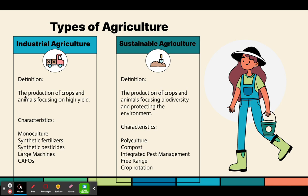Industrial agriculture is the production of crops and animals focusing on high yield. You usually see big machines. It uses monoculture, synthetic fertilizer, synthetic pesticides, large machines, and CAFOs. Sustainable agriculture is the production of crops and animals focusing on biodiversity and protecting the environment. Its characteristics are polyculture, compost, IPM — which is integrated pest management — free range, and crop rotation. When you write these down, make sure you write what they are, not just the names.